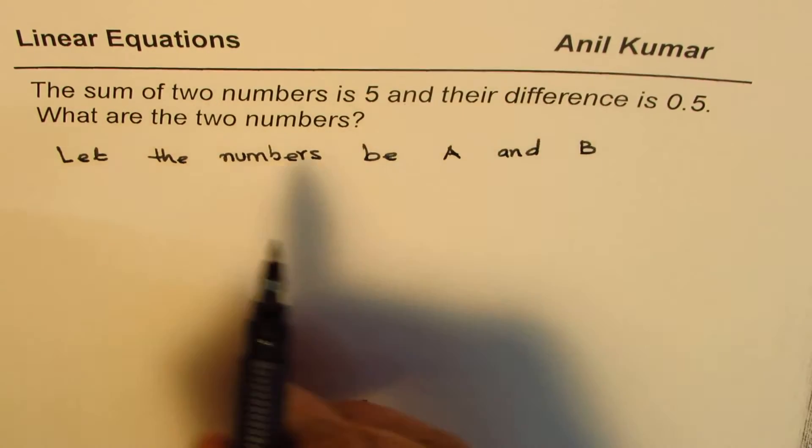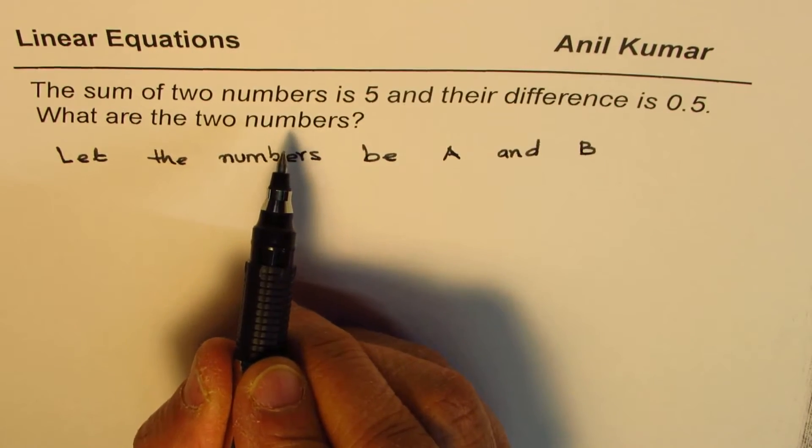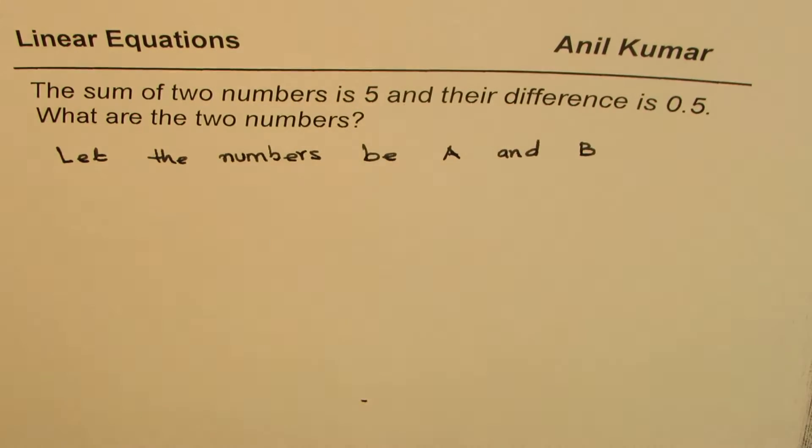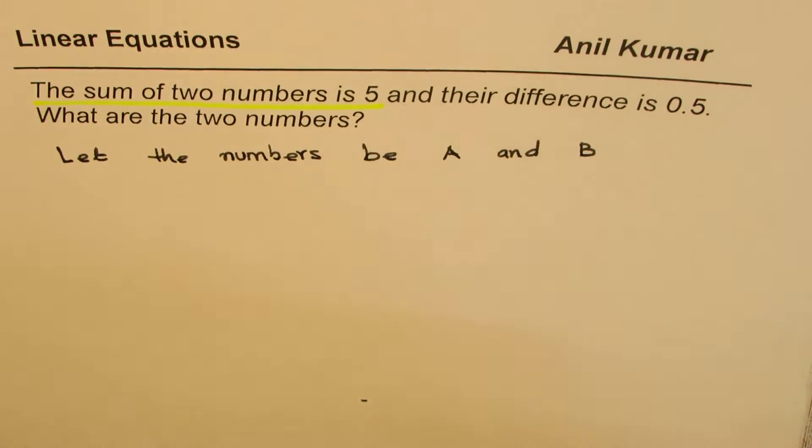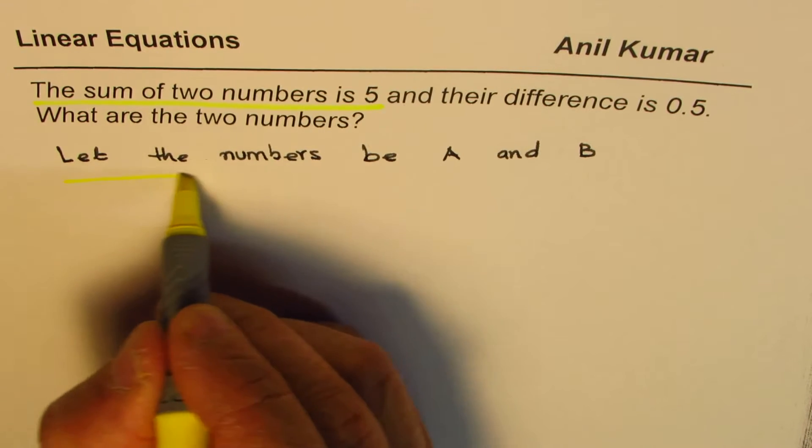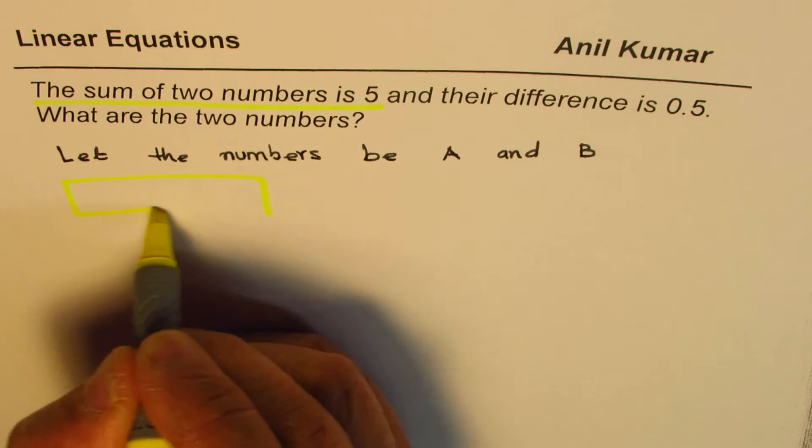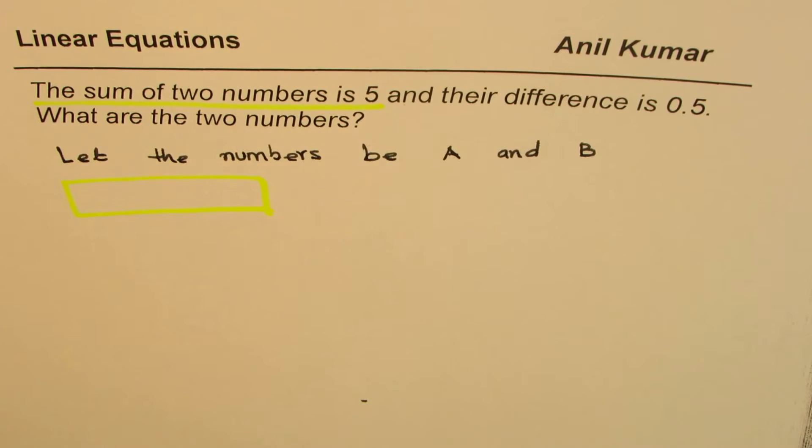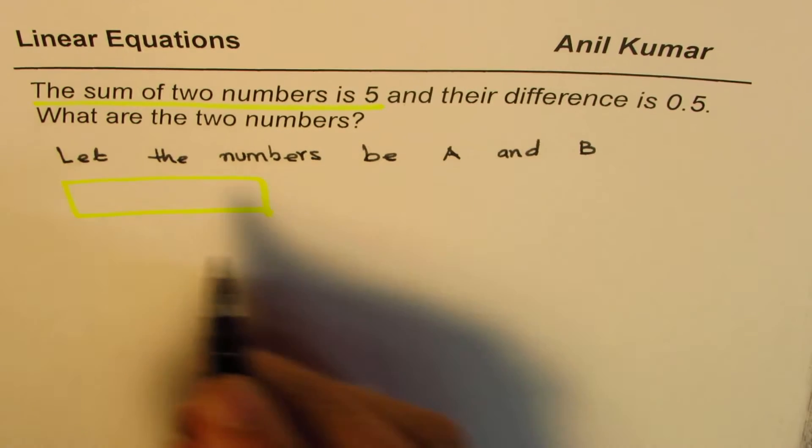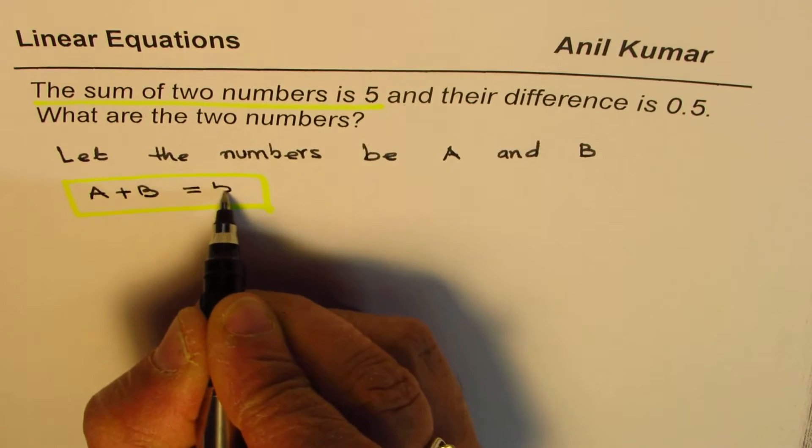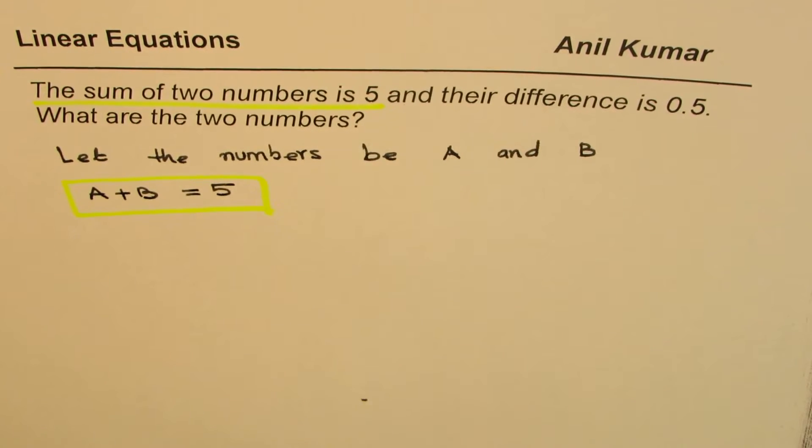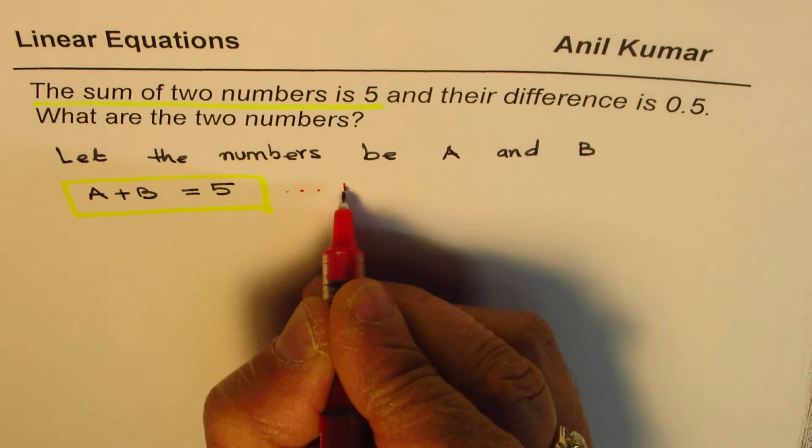Now from each statement, we are going to form equations. It says the sum of two numbers is 5. So let me highlight the first statement. So based on this, I will have one equation. My numbers are A and B. Sum means if I add them, so A plus B equals 5. So that is my first equation. It's always a good practice to number your equations. So it is equation 1.